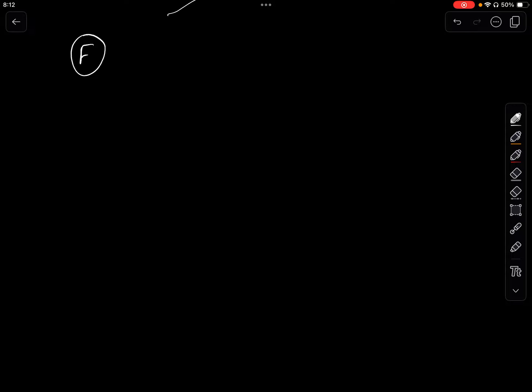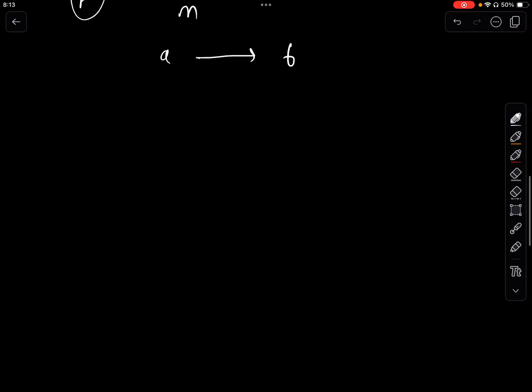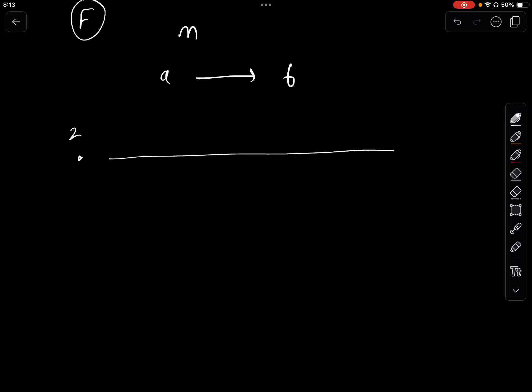Now we go to Problem F. We are given n people, each going from point a to point b where a and b are different for everyone. They all start at the same time and move at the same speed. We need to find how many pairs of people will be at the same point at the same time. We can think of each person's journey as an interval — for example, person 1 from 2 to 10, person 2 from 3 to 7, person 3 from 4 to 11.